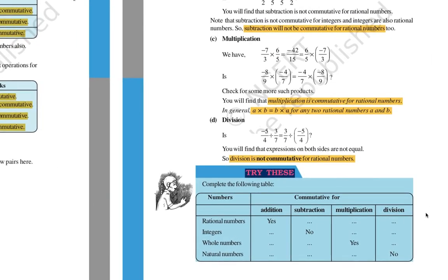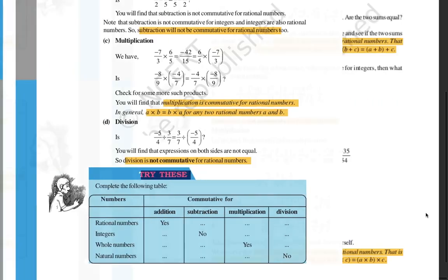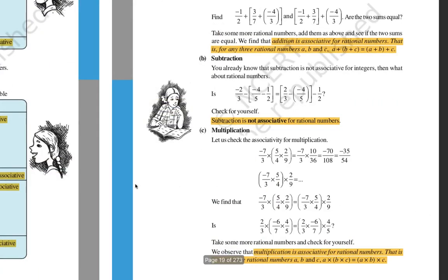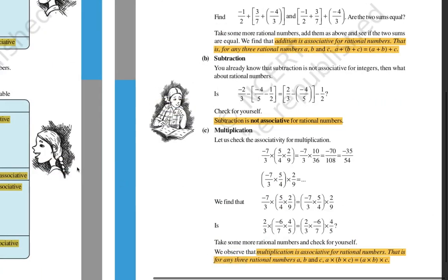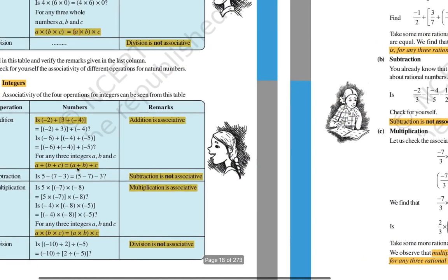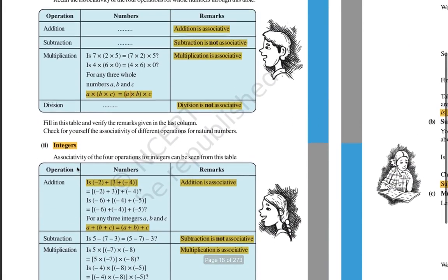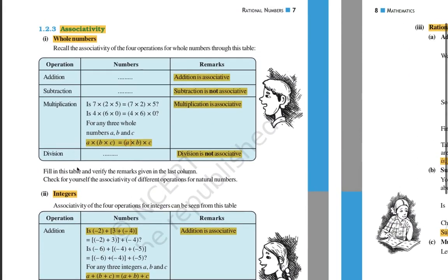So for rational numbers in commutative property: addition — yes, subtraction — no, multiplication — yes, division — no. Similarly you have to apply this for integers, whole numbers, and natural numbers and answer me.